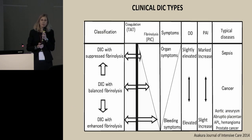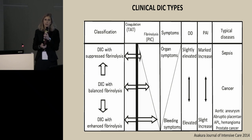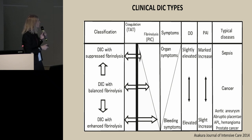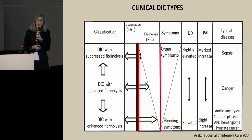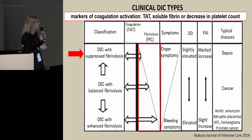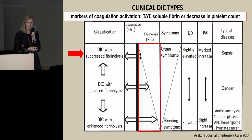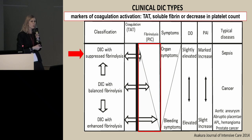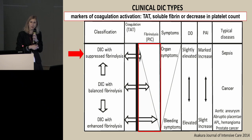It is very important to know the several types of DIC to have an accurate and precise diagnosis. In all types of DIC, we have activation of coagulation, but what differs is the degree of fibrinolysis. If we base our diagnosis on fibrinolytic activity markers such as D-dimers or fibrin degradation products, we will miss DIC with suppressed fibrinolysis. We should base our diagnosis on markers of coagulation activation — such as thrombin-antithrombin complexes, soluble fibrin, or platelet counts — because these are present in all types of DIC.